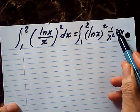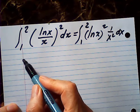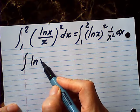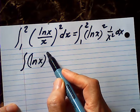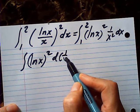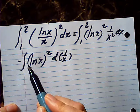And then 1 over x squared dx could be written as negative negative d of 1 over x, isn't it? So, negative in the front.